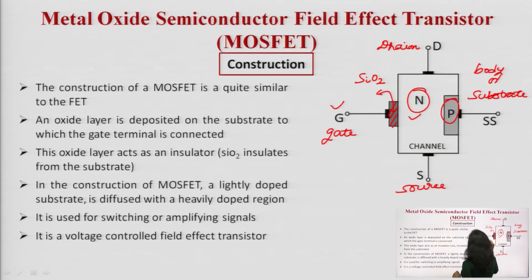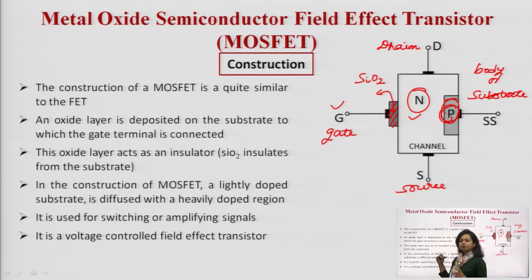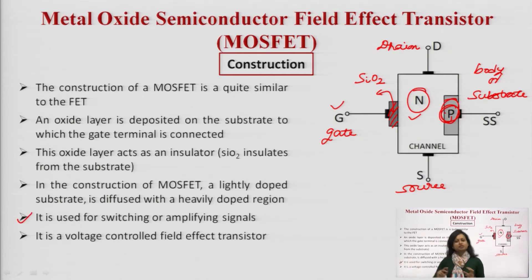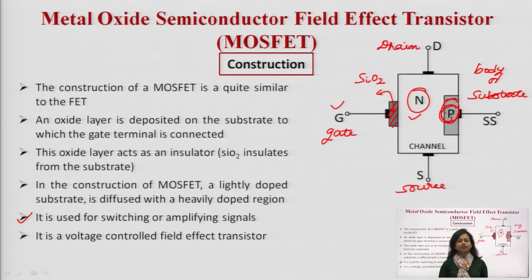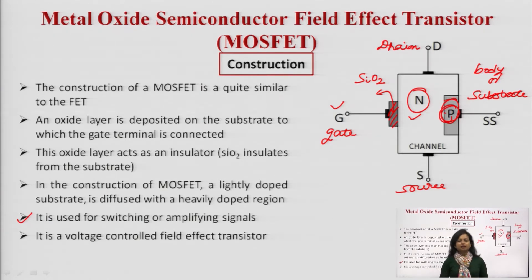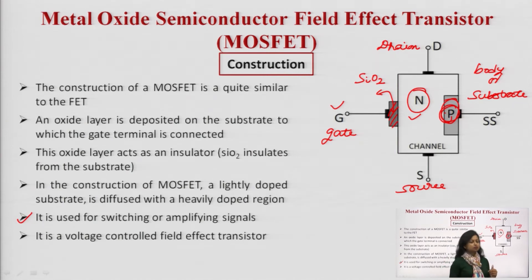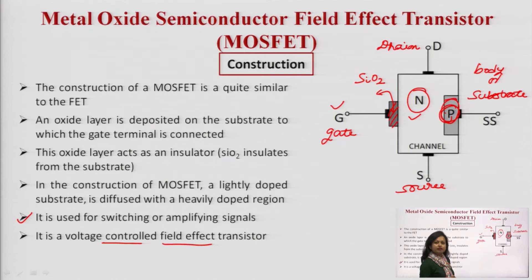A lightly doped substrate is diffused with a heavily doped region. The common applications include switching and amplifying signals. Most importantly, MOSFET is a voltage-controlled device. As you may know from previous sessions, BJT is a current-controlled device, but MOSFET or FET is a voltage-controlled device. Here the input voltage controls the parameters, so you must remember that this is a voltage-controlled field effect transistor.